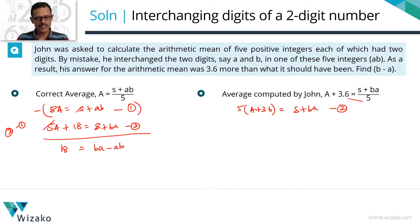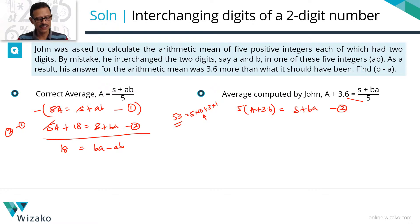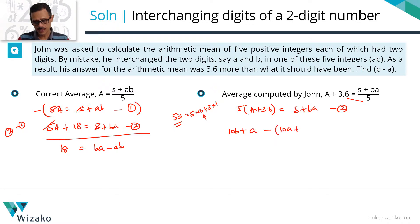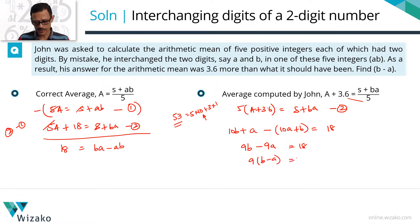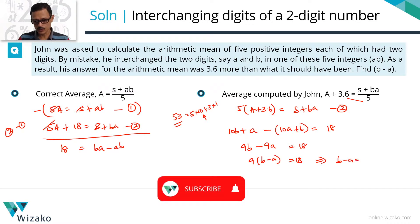Look at any number, say 53. That's 5×10 + 3×1. We assign place weights explicitly: BA is 10B + A, and AB is 10A + B. So (10B + A) − (10A + B) = 18. That gives 9B − 9A = 18, or 9(B − A) = 18, so B − A = 2. Answer found.